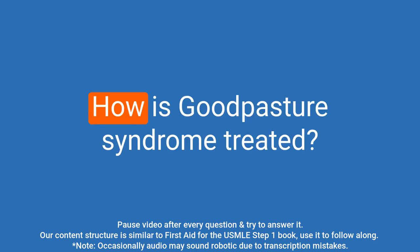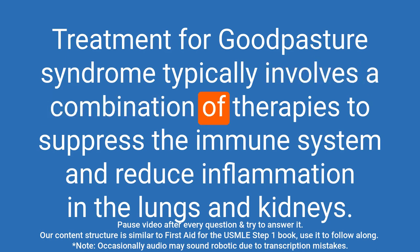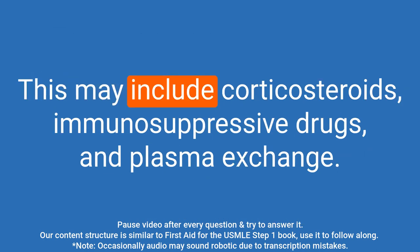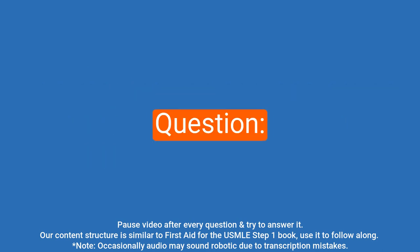Question: How is Goodpasture syndrome treated? Answer: Treatment for Goodpasture syndrome typically involves a combination of therapies to suppress the immune system and reduce inflammation in the lungs and kidneys. This may include corticosteroids, immunosuppressive drugs, and plasma exchange.